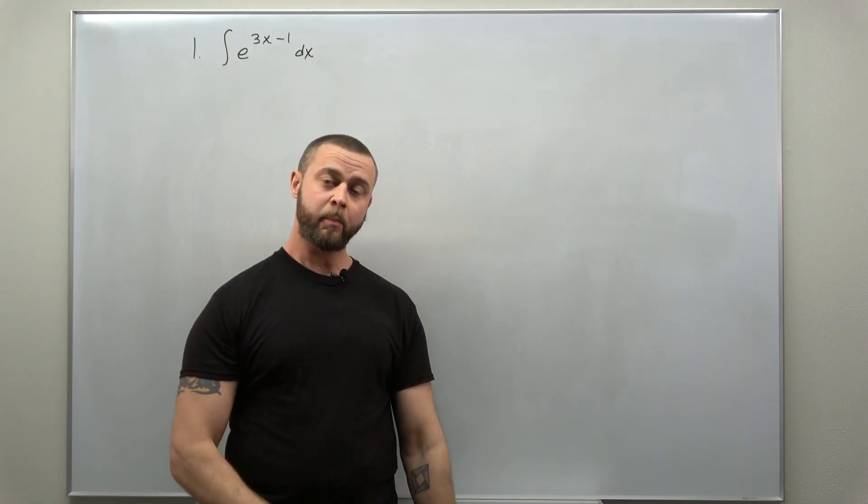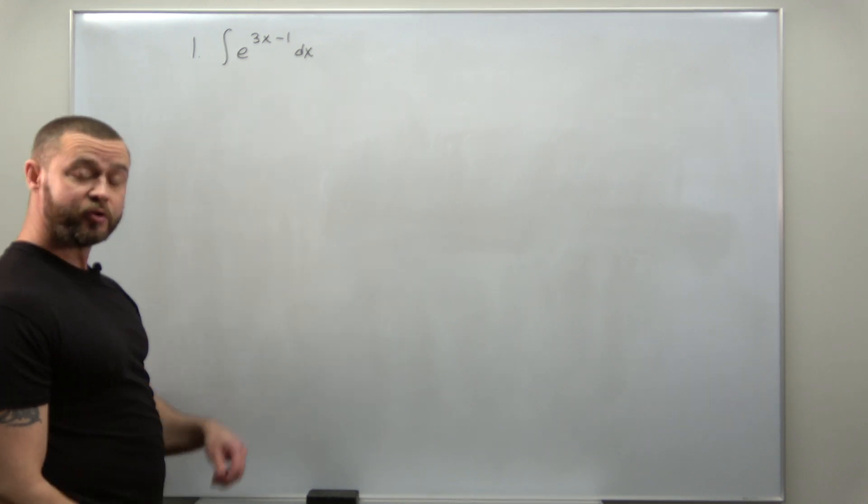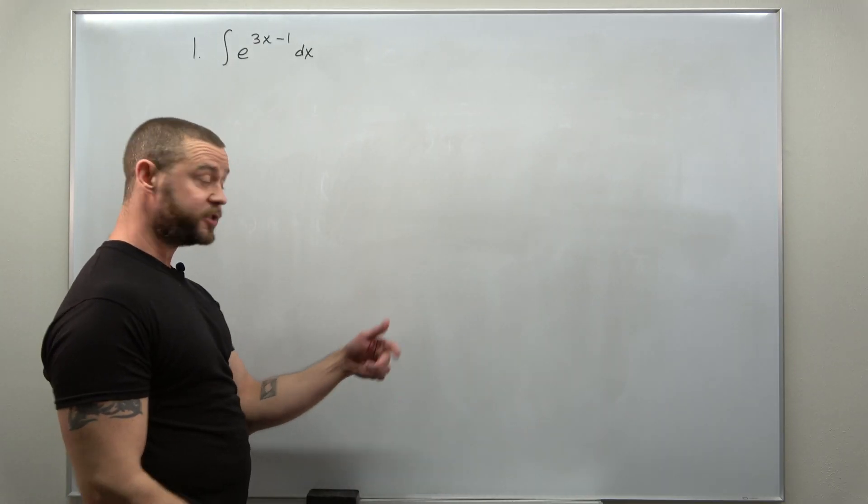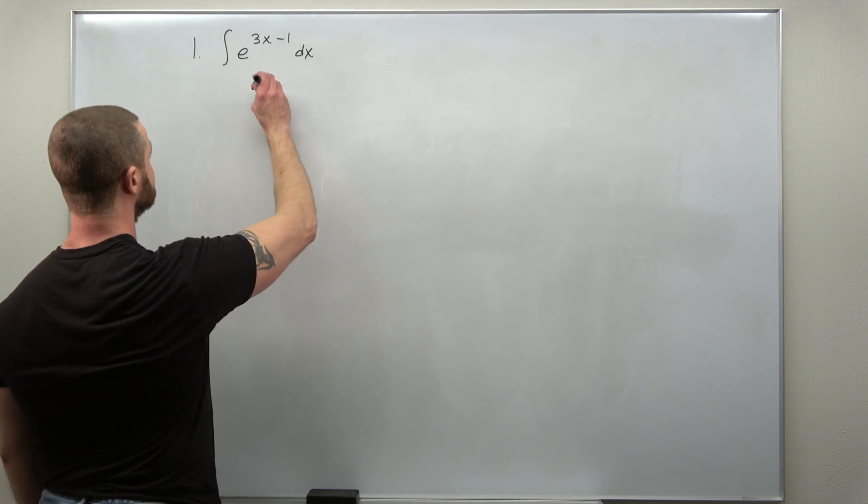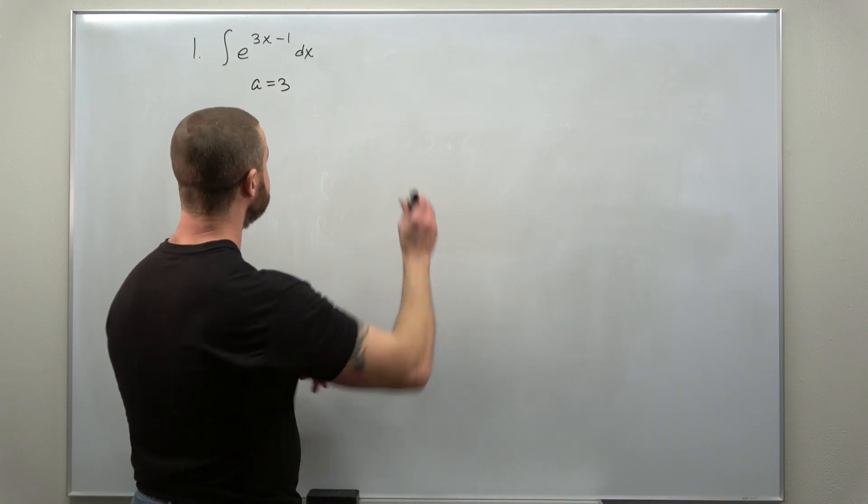All right, let's get to more examples. We're going to start with another exponential integral. All we need to do to apply the 1 over a shortcut is identify the value of a which is here 3 and our antiderivative we get a 1 over a factor, 1 over 3 times the basic antiderivative.